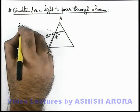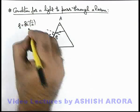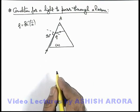where the value of theta c we can write as sine inverse of 1 by mu, if the outside medium is air and the prism is made up of material of refractive index mu.